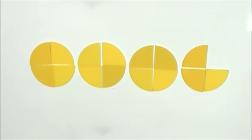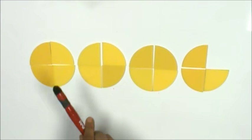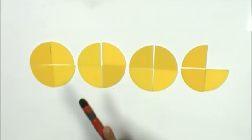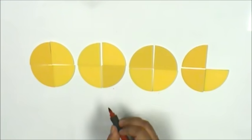Let's describe the model below in two different ways. I have one whole, another whole, and another whole. So I have one, two, three whole circles.